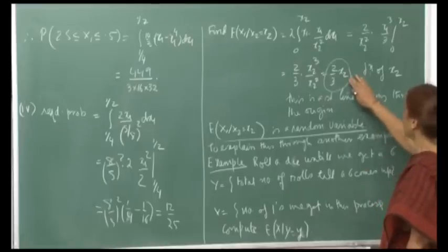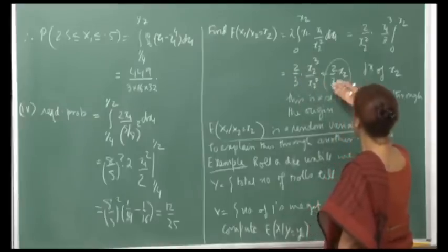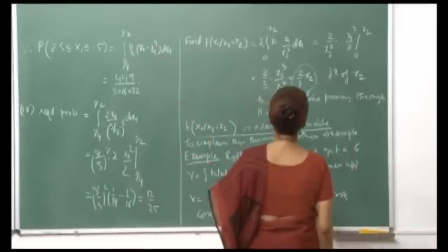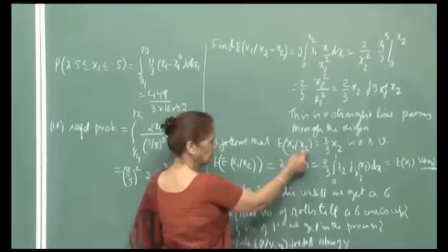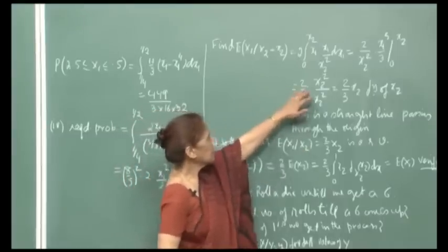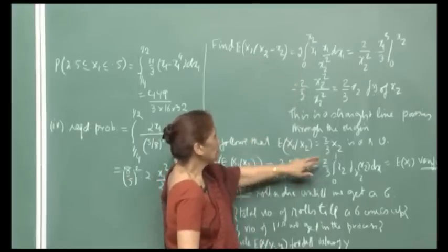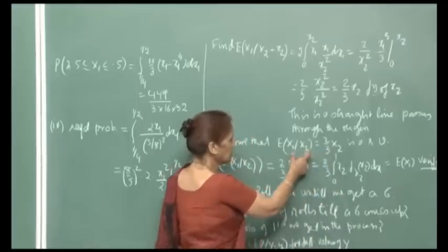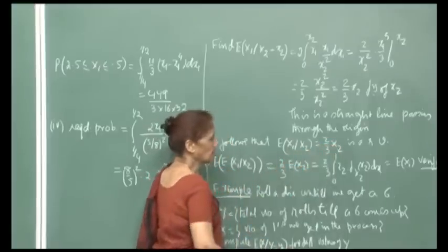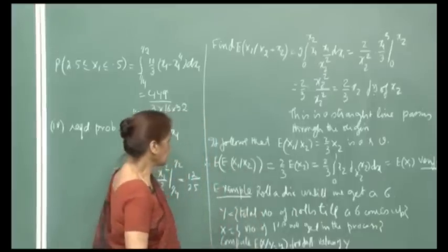This is a straight line passing through the origin, so the relationship is linear — E[x1|x2=x2] is a linear function of x2. Therefore, the expected value of x1 given capital X2 will be (2/3)·X2, which is a random variable. For a particular value of x2 we get the conditional expectation; as values of x2 vary, this becomes the expected value of x1 conditioned on the random variable X2 — a random variable that takes different values for different realizations.